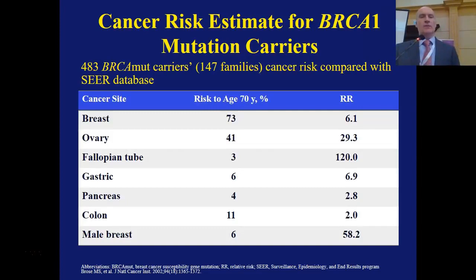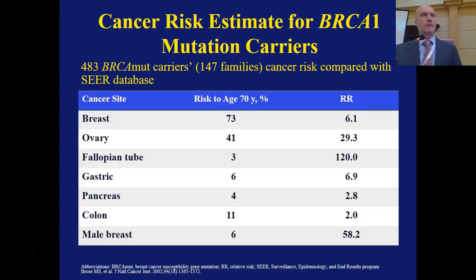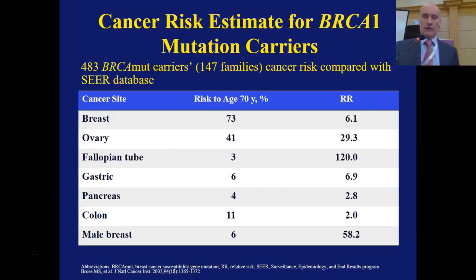This slide depicts the other things one needs to think about. We have a much higher risk of developing breast or ovarian cancer, but look at the ovarian cancer hazard ratio — almost 30 relative risk. We get excited when a news article says something has a 1.5 relative risk. Here you have 29, and for fallopian tube, 120. You can see the incredible impact carrying these genes can have. Not only for breast, ovarian, and fallopian tube, but also gastric, pancreatic, male breast cancer at almost 60, and colon and pancreatic cancer. So comprehensive screening programs are important for those with these mutations.